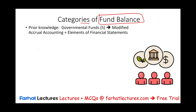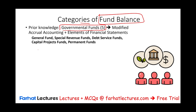One is: do we know the five governmental funds? We have various governmental funds such as the general fund, the special purpose revenue fund, debt service funds, capital project funds, and the permanent funds. And as a review, these funds use modified accrual accounting, not full accrual — modified accrual accounting.